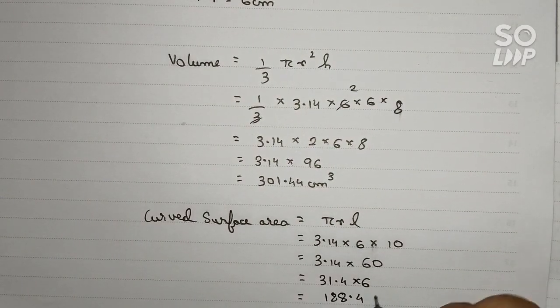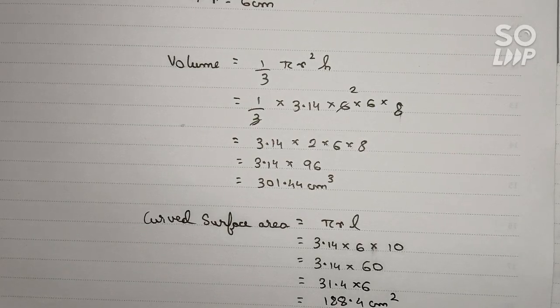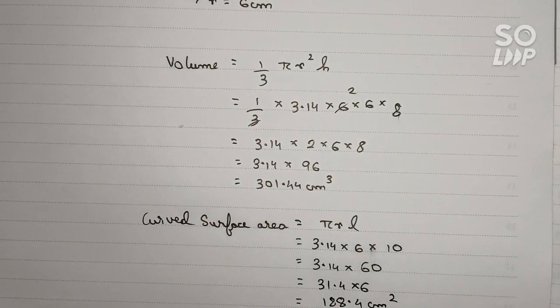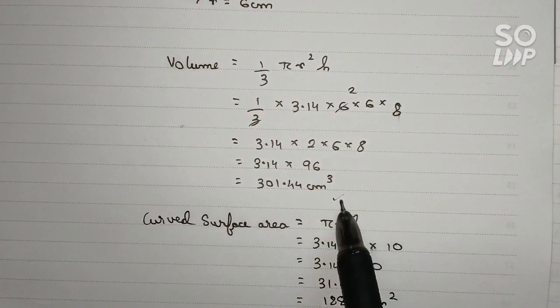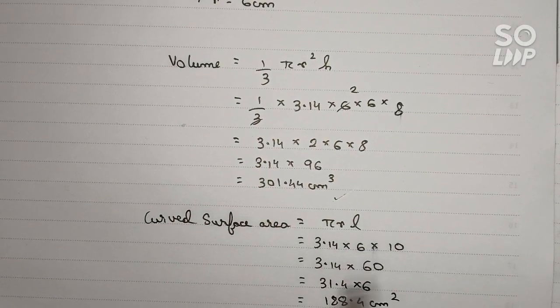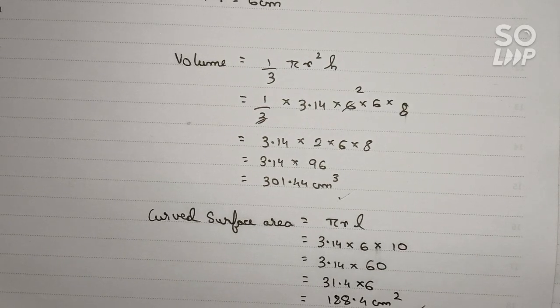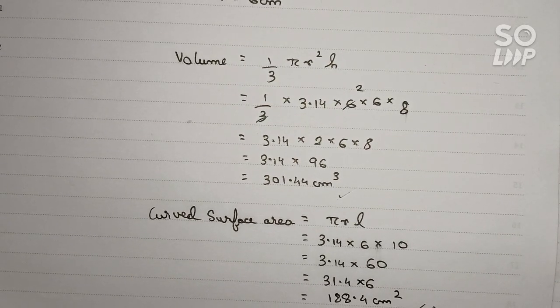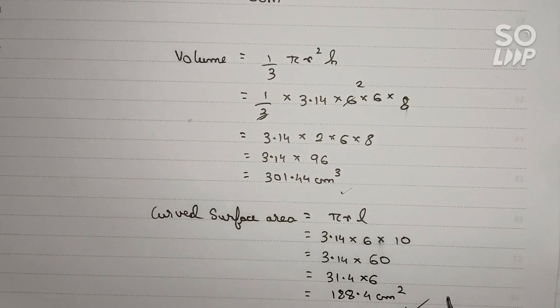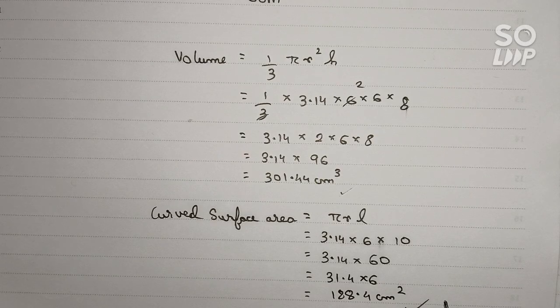So for this question our final answers will be: the volume of the cone is 301.44 centimeter cube, and the curved surface area will be 188.4 centimeter square. So these are the final answers for this question. Thanks for watching this video and please subscribe my channel for more solutions like this.